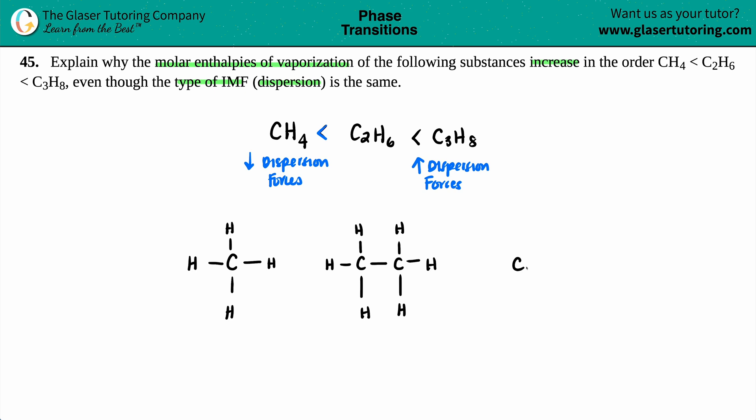C3H8, we have three carbons in a line, because remember, hydrogens can never be in the middle. And then I just need to put eight hydrogens around. So I'll have three here, another three on the end here, and then I have two in the middle. That's the total of eight. CH4 has the least number of dispersion, which then comes C2H6, then comes C3H8.